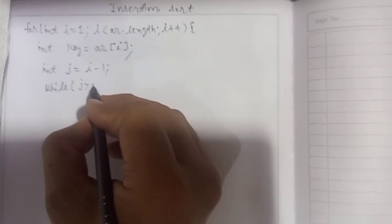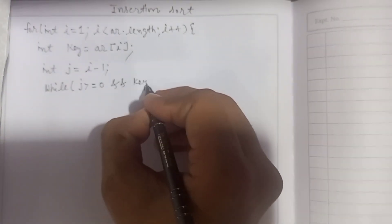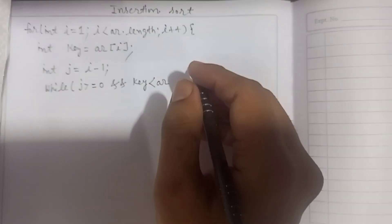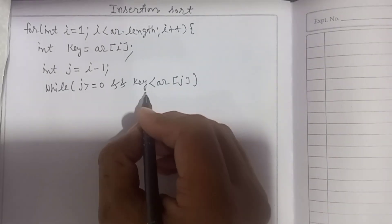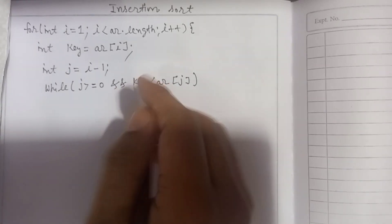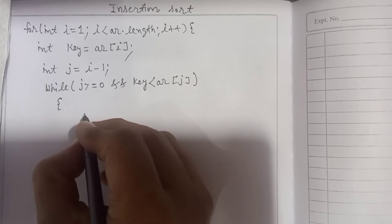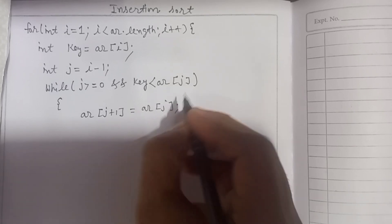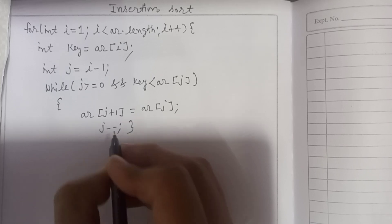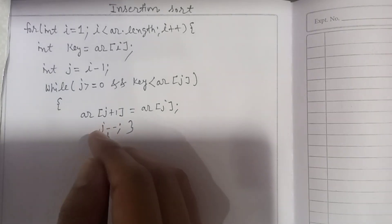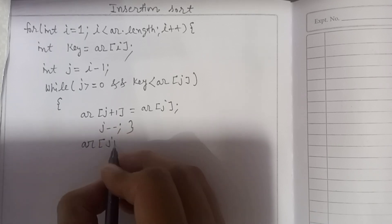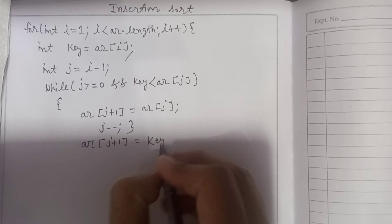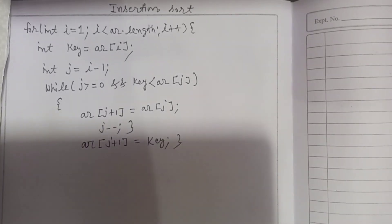The while loop is the most suitable loop for insertion sort — we cannot use a for loop here. The condition is: while j is greater than or equal to zero and the key is lesser than arr[j] — because we are doing ascending order. If doing descending order, we check for greater. When both conditions are true, the value shifts: whatever is on j plus one goes to j, and j is decreased by one. Then in the outer loop, arr[j+1] gets the key value.